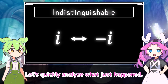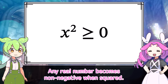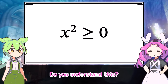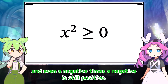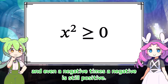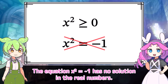Let's quickly analyze what just happened. Did I do something wrong? Any real number becomes non-negative when squared. If you multiply a positive by a positive, it's positive. And even a negative times a negative is still positive. That means there's no number that becomes negative one when squared — the equation x squared equals negative one has no solution in the real numbers.